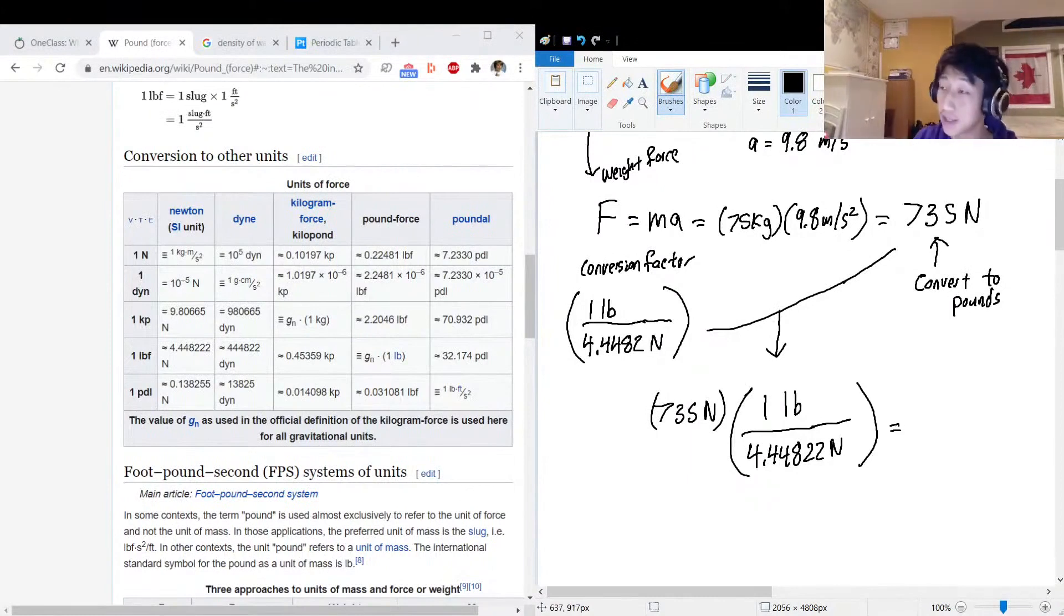And let's take a look at what happens. You see the newtons, the units for newtons up here, that gets neutralized with the units for newtons down here. So the only units that are left is just lb. And we got to do the math. So 735 divide that by 4.44822, and the result of that math is 165.23 pounds.